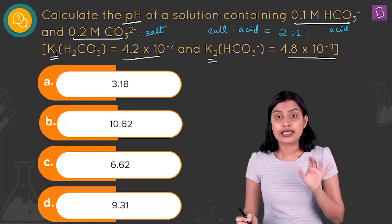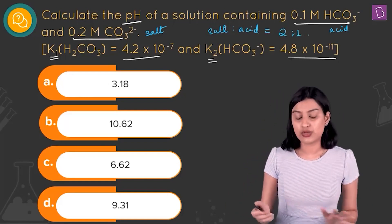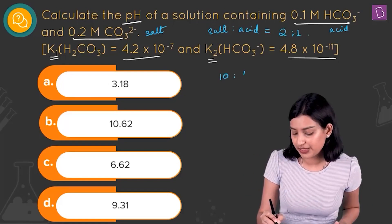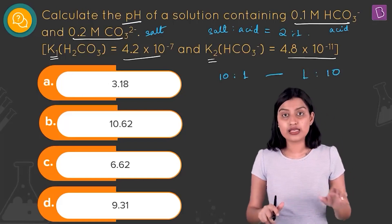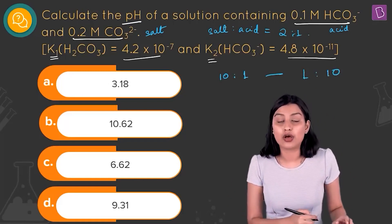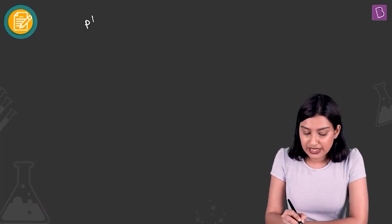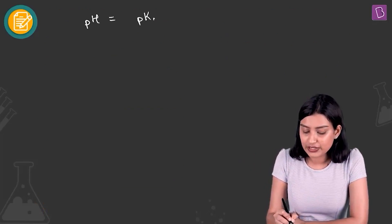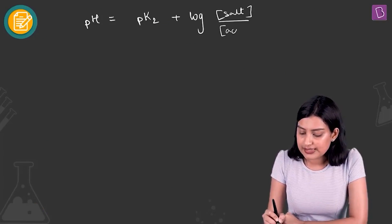Since the ratio is 2:1, we can talk about buffer action, because we need the salt to acid concentration to be in the range of 10:1 to 1:10. As long as it falls in this ratio, we can talk about buffer action of this solution. The formula for pH is going to be pK2 plus log of concentration of salt divided by acid.